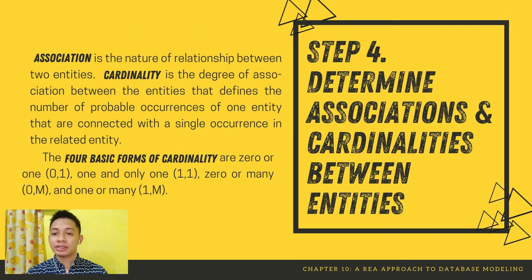The last step is Step 4: determine associations and cardinalities between entities. Association is the nature of the relationship between two entities. Cardinality is the degree of association between entities that defines the number of probable occurrences of one entity connected with a single occurrence in the related entity. The four basic forms of cardinality are: zero or one, one and only one, zero or many, and one or many.